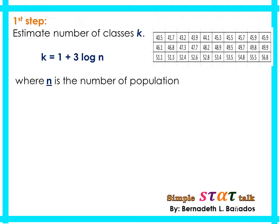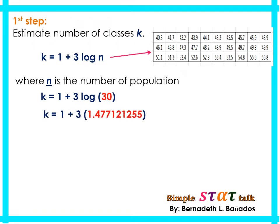For the first step, we will use the formula k = 1 + 3·log(n). To obtain n, simply count the values in the given data set. In this case, our n is 30. Use your calculator to obtain log(30) — just press log, then 30 — and you will get 1.477121255. Multiply it by 3 to get 4.431363764.